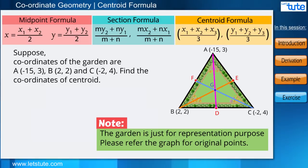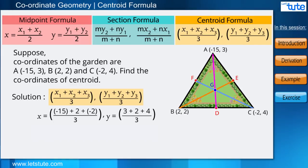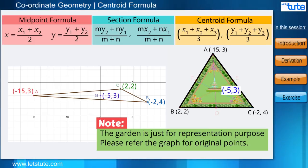So we will be directly using the centroid formula, and after substituting the values and simplifying this further, we will get x is equal to -5 and y is equal to 3. These are the coordinates of the centroid. Therefore, coordinates of the centroid are (-5, 3), so we will build our fountain at this point. So friends, with the help of coordinate geometry, it was quite easy to solve this, isn't it?